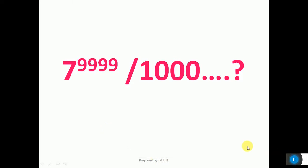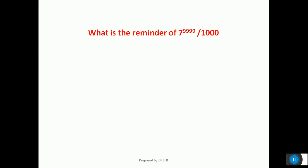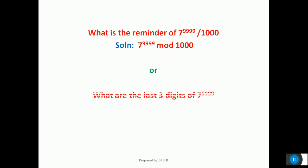Have you come across this problem? What is the answer for 7 to the power 9,999 divided by 1,000? What is the remainder of 7 to the power 9,999 divided by 1,000? The answer is 7 to the power 9,999 mod 1,000. Or have you come across this problem too: what are the last three digits of 7 to the power 9,999? The solution is the same — 7 raised to the power 9,999 mod 1,000.